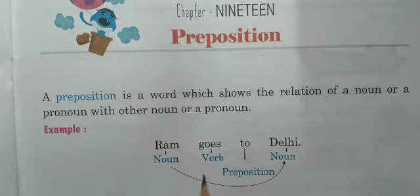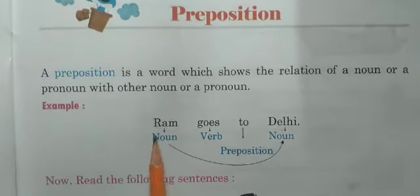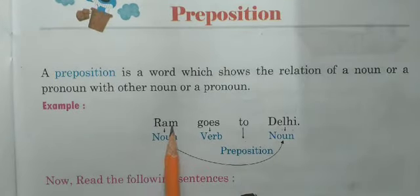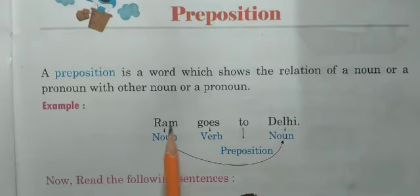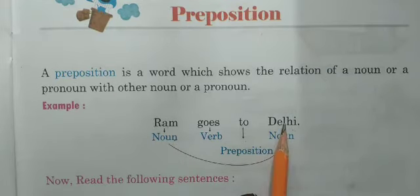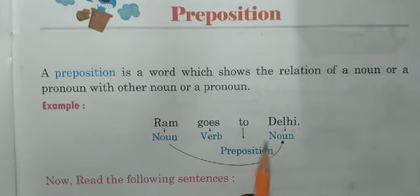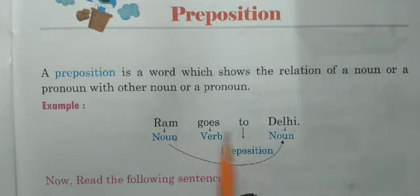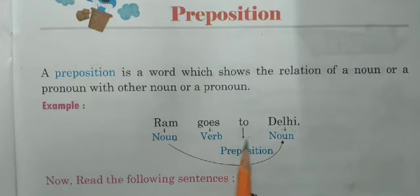Yahan par example hai. Ram goes to Delhi. Yahan par Ram noun hai, Delhi noun hai. Means Ram is noun and Delhi is another noun. Goes is the verb, and 'to' is the preposition. Yeh noun ke relation ko show kar raha hai.